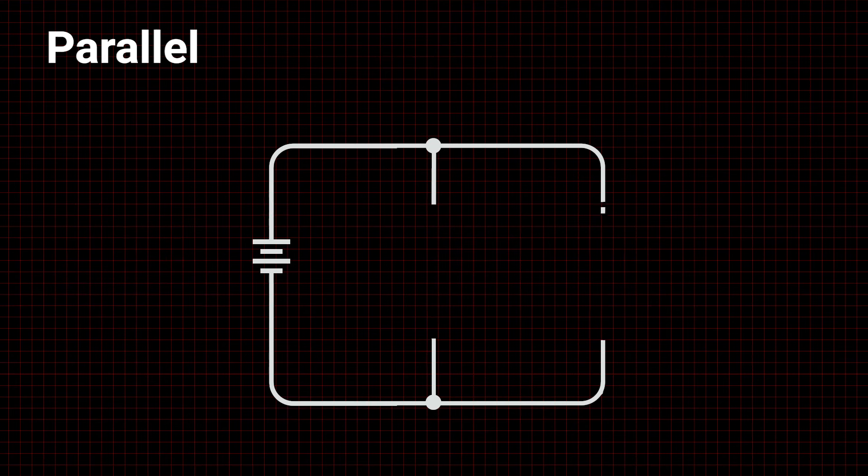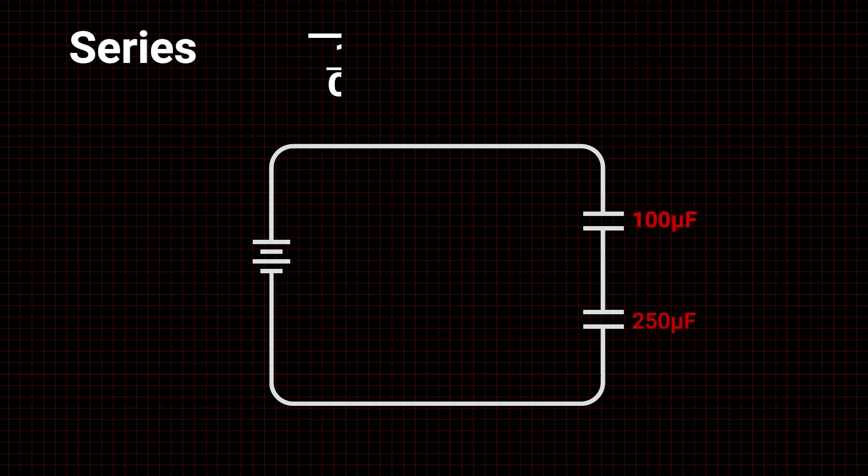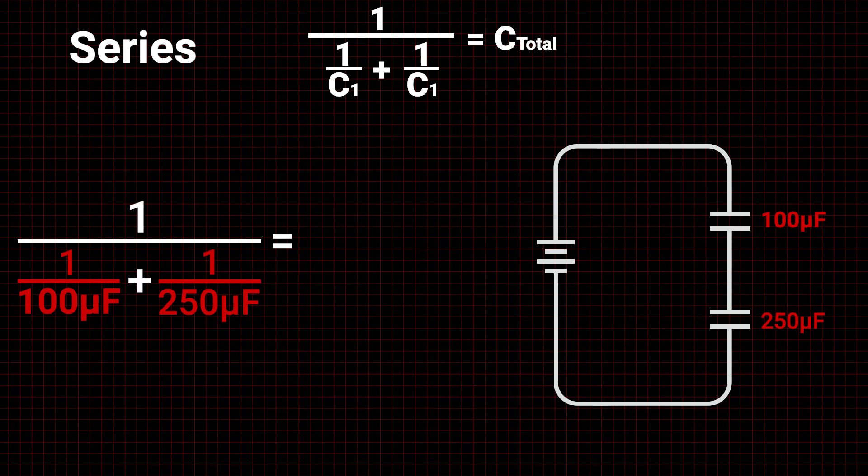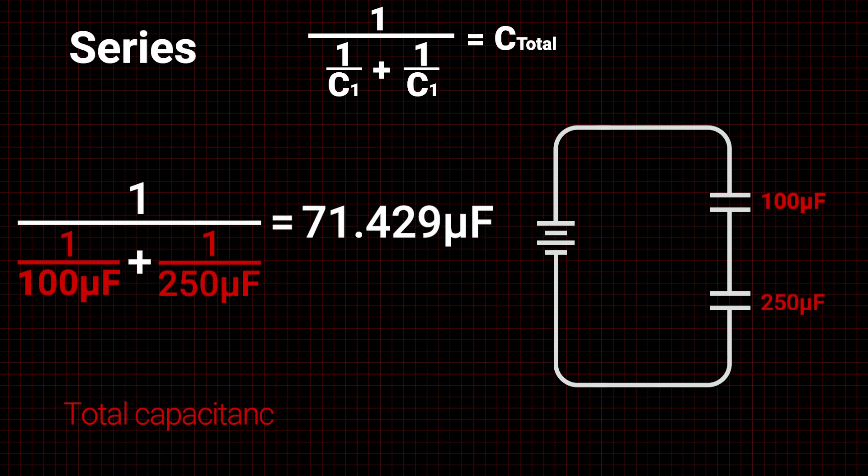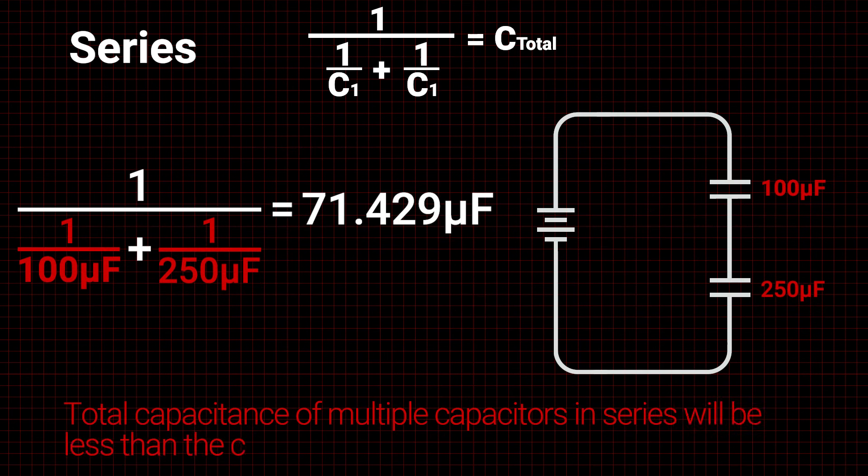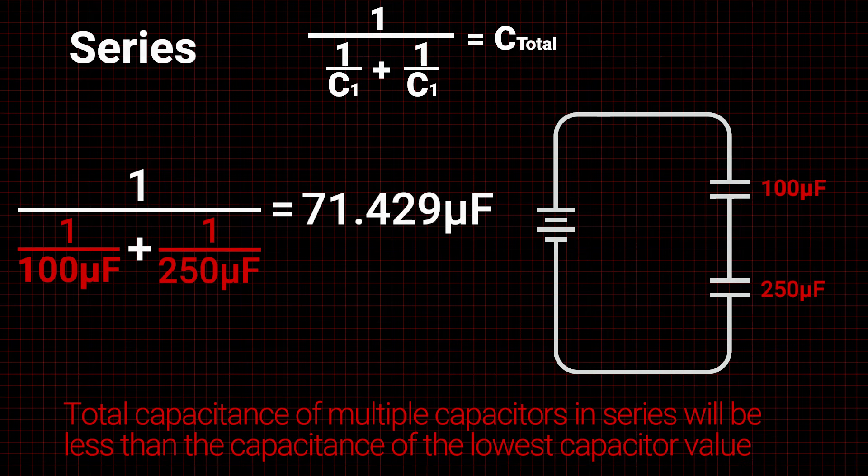The formula for calculating total series capacitance involves finding the inverse of the sum of the inverses of individual capacitor values. When calculated properly, the total capacitance of multiple capacitors in series will be less than the capacitance of the lowest capacitor value.